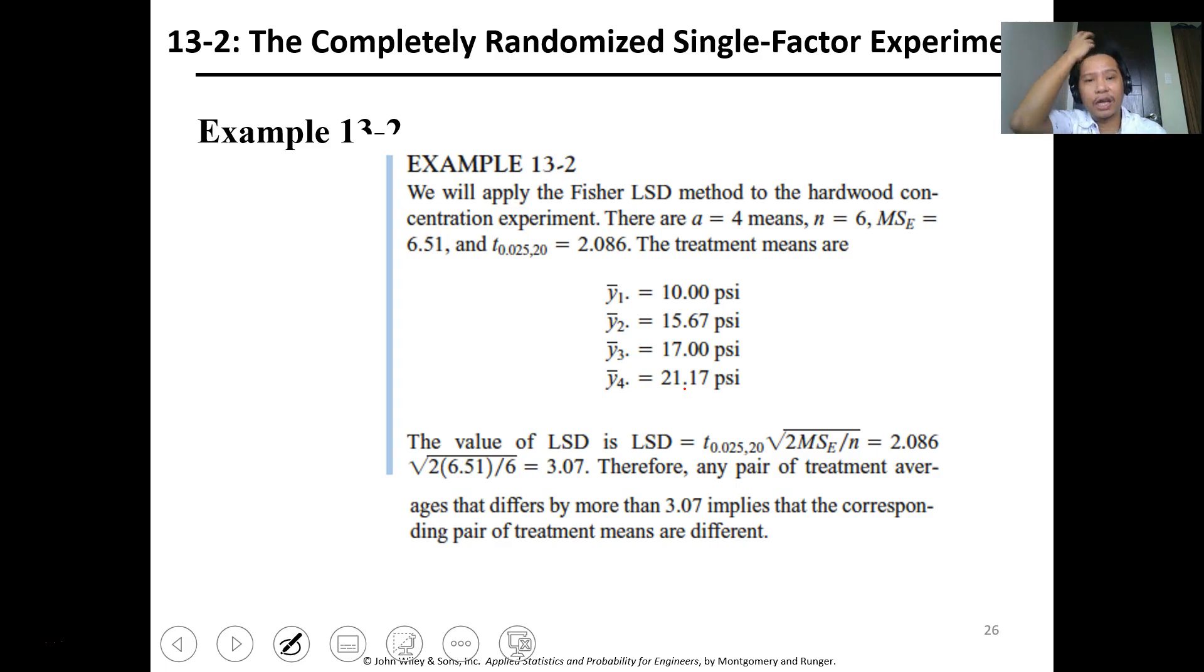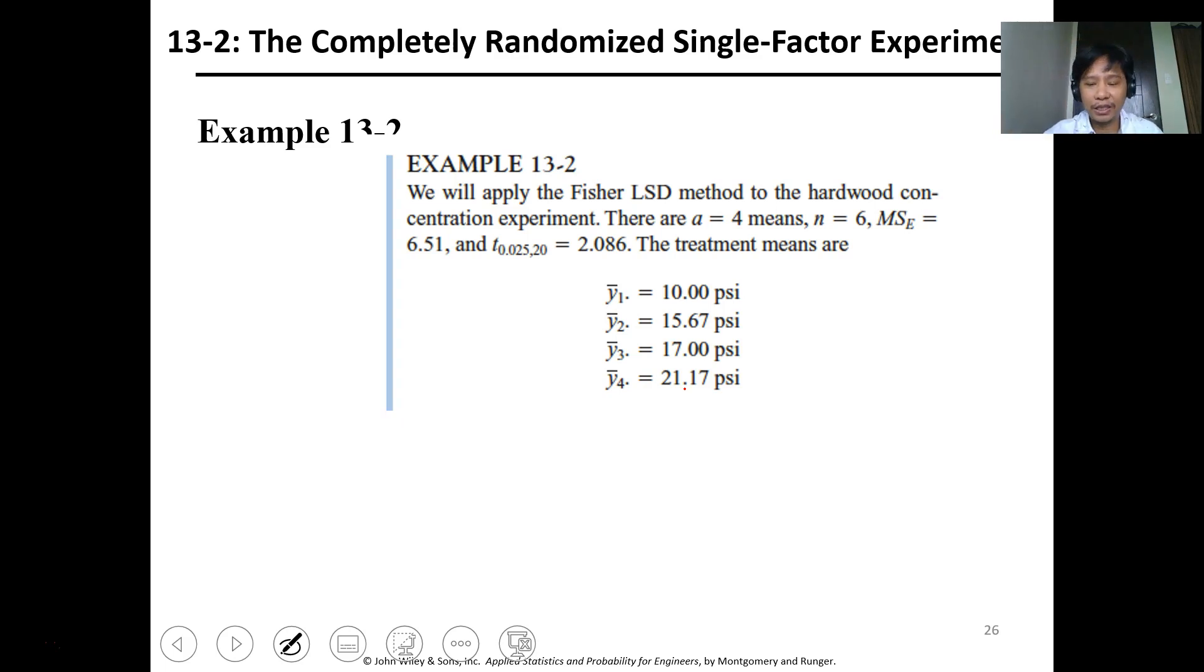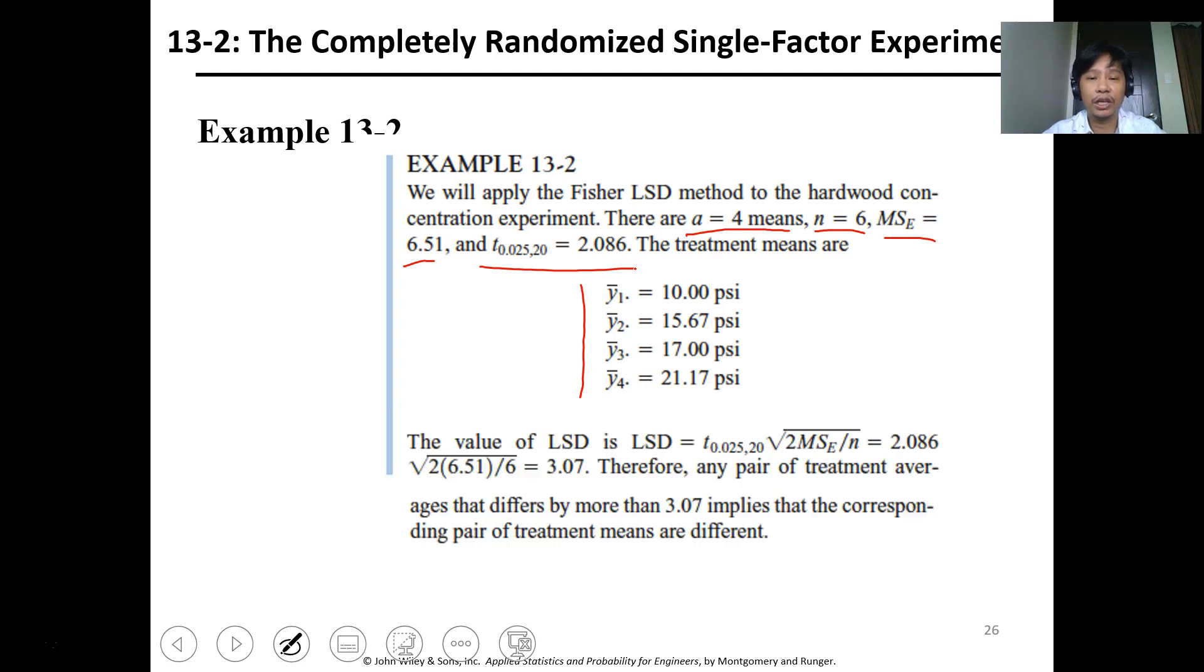Now for the data that we obtained last time, this is our data. This is the average per row at different treatments. You have A=4, n=6, MSE is 6.5, and t 0.025,20 is equal to 2.08. So calculating the LSD of the sample, just utilize the formula. We have 3.0.